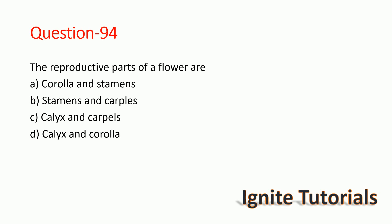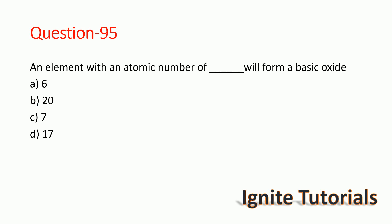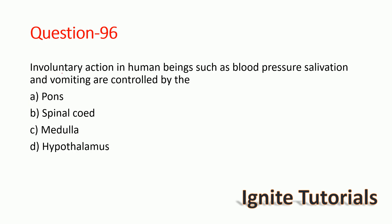Question 94: An element with which atomic number will form a basic oxide? If the atomic number is 20, it will form basic oxides — option B is the correct answer.